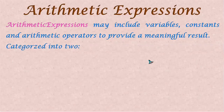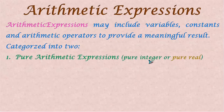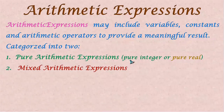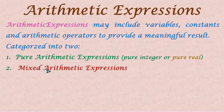Arithmetic expressions are categorized into two. One is pure arithmetic expressions; the other one is mixed arithmetic expressions. Pure arithmetic expressions means either they may have purely integer type or purely real type. Mixed means it will have both integer as well as real type mixed together.